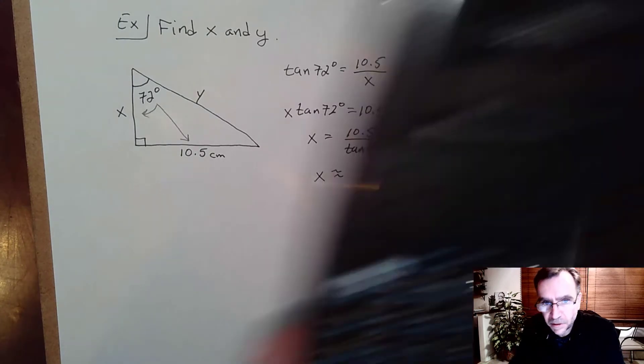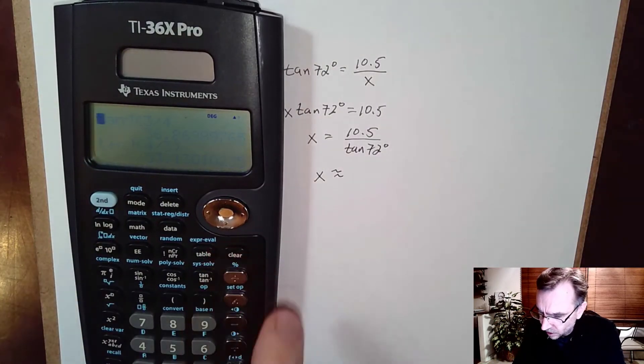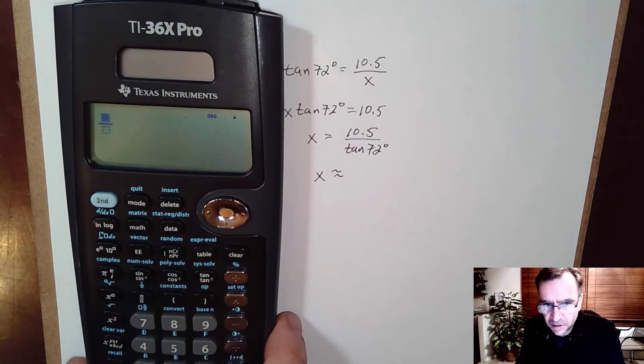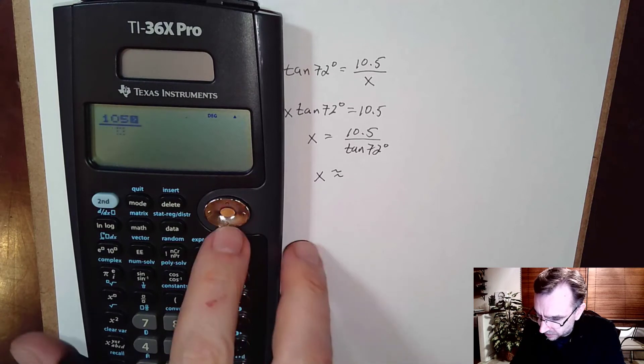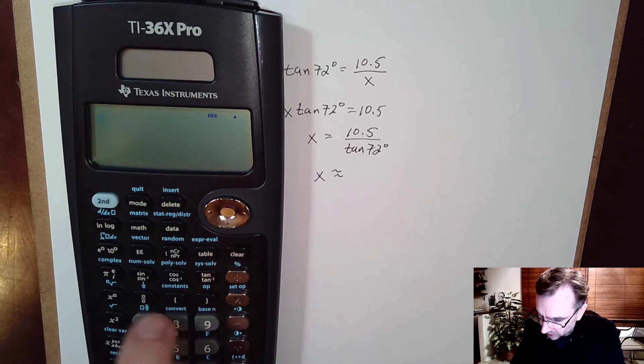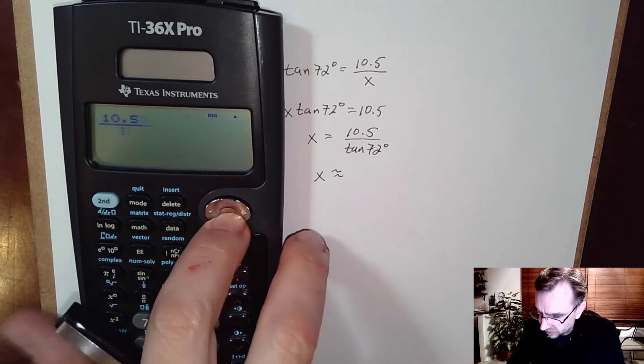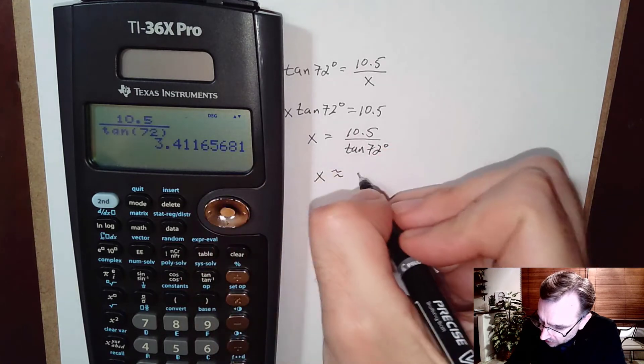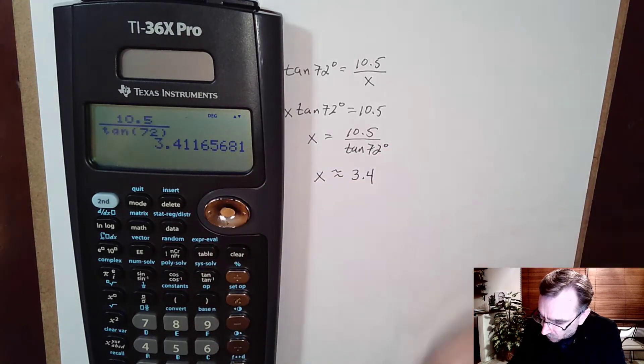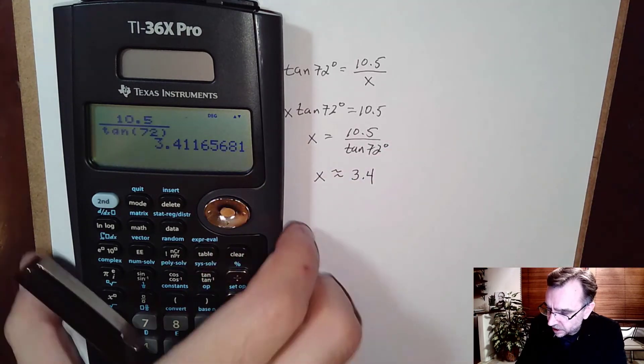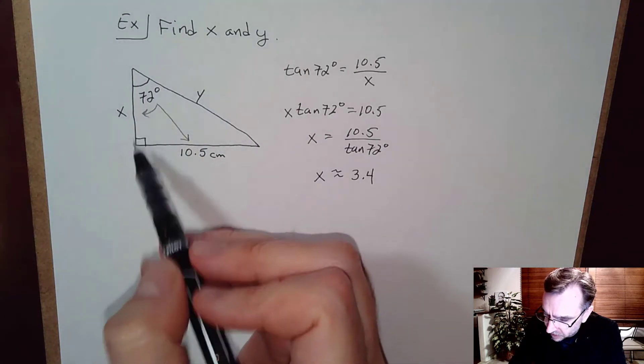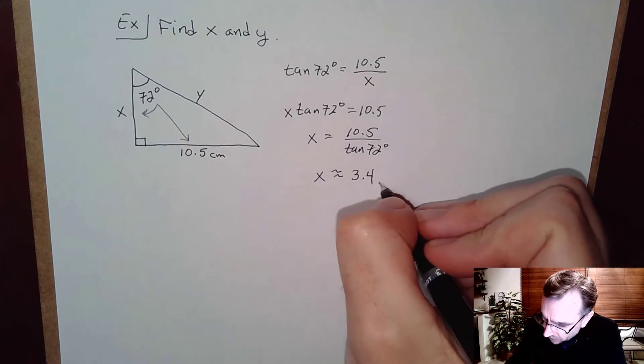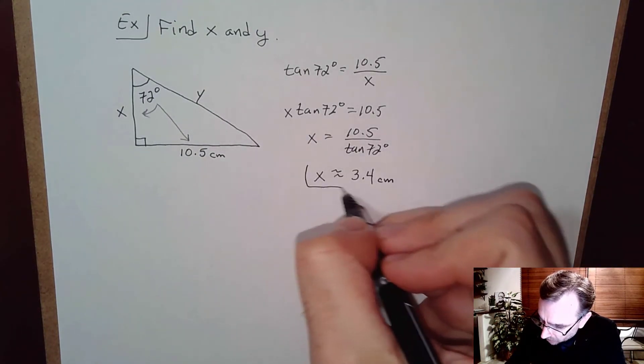So once we have that we can do that on a calculator. And I'm going to make use of my fraction button, 10.5 divided by tangent of 72 degrees. So on a calculator I can see that's approximately 3.4. Now that's not an angle, right, that's the length of the side that's unknown and the unit here is centimeters.